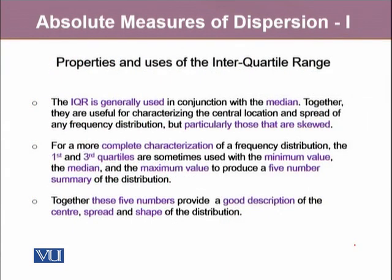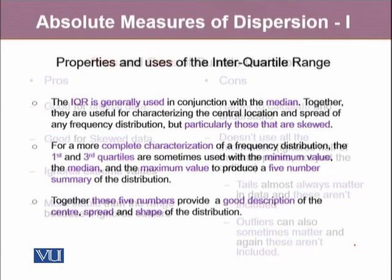There are a few properties of using the interquartile range. It is generally used in conjunction with the median. Together they are useful for characterizing the central location and the spread of a frequency distribution. These are mostly recommended when data is skewed. For a more complete characterization of a frequency distribution, we use five values: the minimum observation, the maximum observation, the median, the first quartile, and the third quartile. Together, these five observations give a good description of the center, spread, and shape of the distribution.